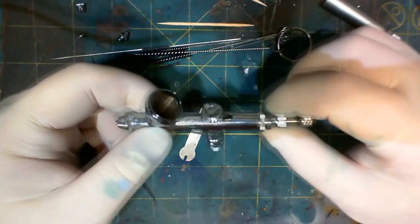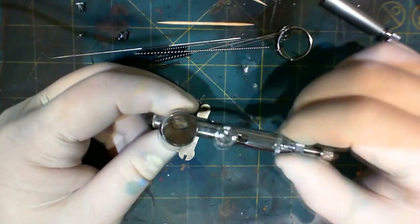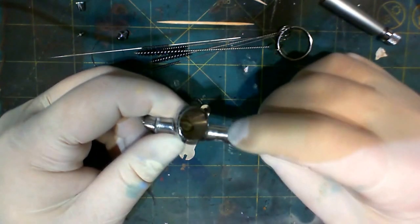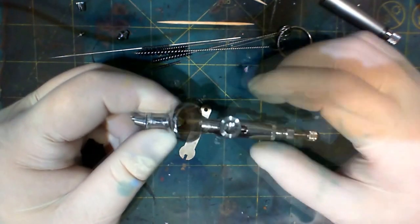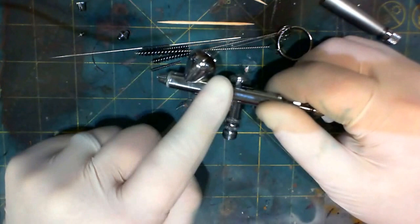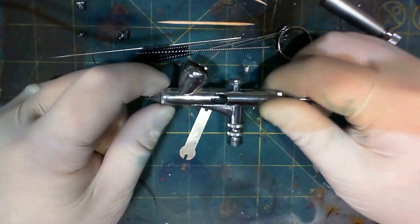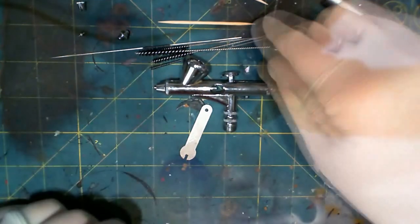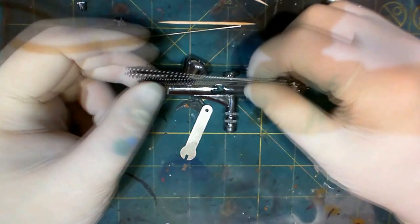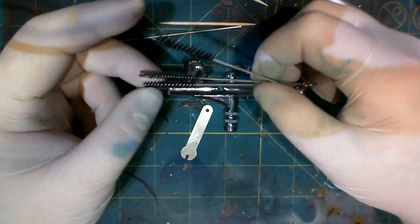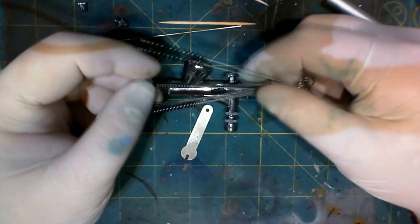And when you draw it back, you can draw it farther into the airbrush, the paint, and I don't want to do that. So I'm just going to pull it out through the front. And I'm going to leave this whole assembly in for now.